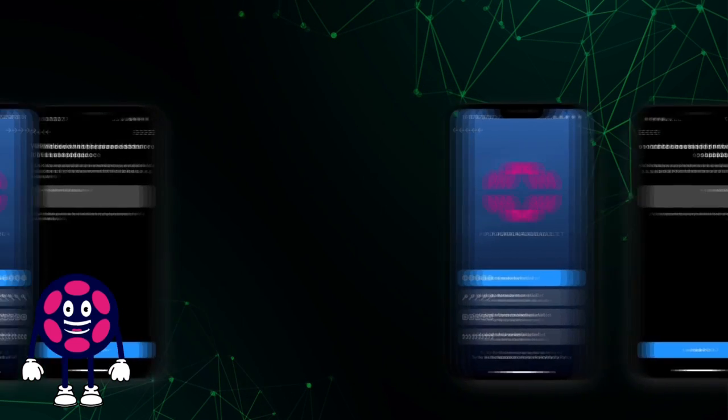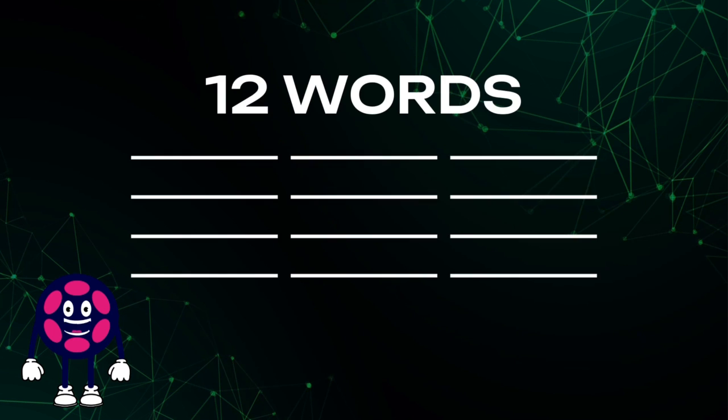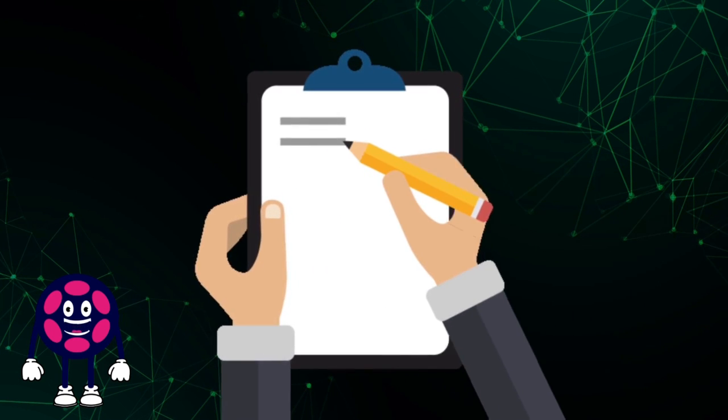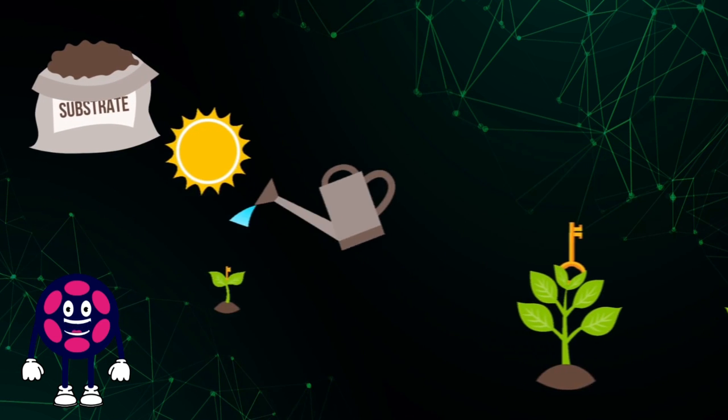The words are randomly selected from a dictionary list of 2048. A seed phrase can be transformed into a private key, but a private key cannot be transformed into a seed phrase.